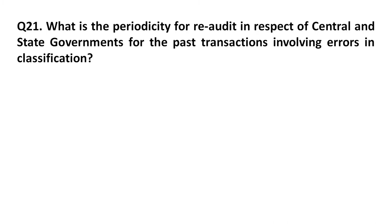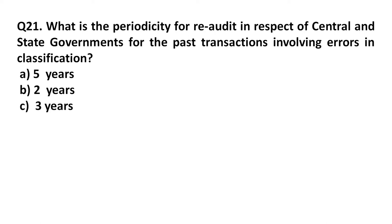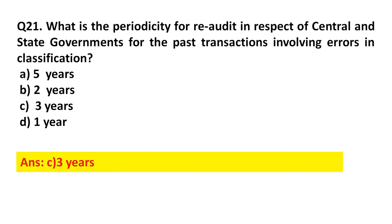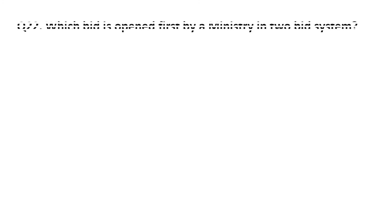Question 21: What is the periodicity for re-audit in respect of Central and State Government for the first transaction involving errors in classification? Option A: Five years. Option B: Two years. Option C: Three years. Option D: One year. Answer: Option C, three years.